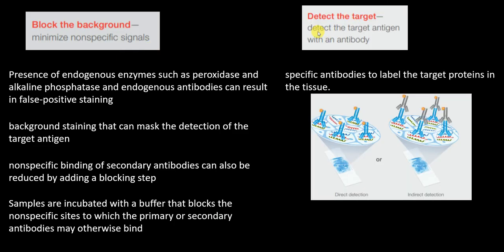The detection step involves detecting the target antigen with an antibody and labeling the target protein in the tissue. One method is direct detection, where a conjugated primary antibody is used. The other is indirect detection, where a primary antibody binds to the antigen and a secondary antibody — conjugated to an enzyme such as horseradish peroxidase — binds to the primary antibody. Indirect detection amplifies the signal.